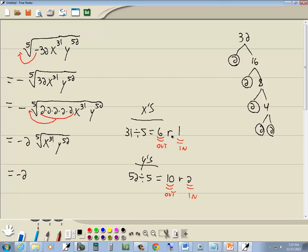Okay, so what did we say? We said we're going to have 6 x's come out, so I have x to the 6. And we said we're going to have 10 y's come out, so we've got y to the 10th.